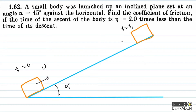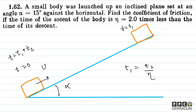This means the time of ascent T1 is equal to T2 upon eta. So T1 is equal to T2 divided by eta, and with eta equal to 2, T1 equals T2 over 2.